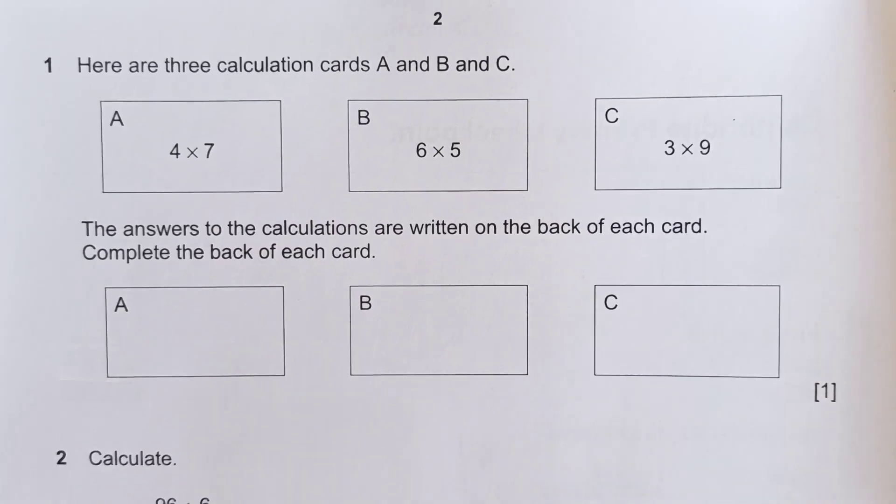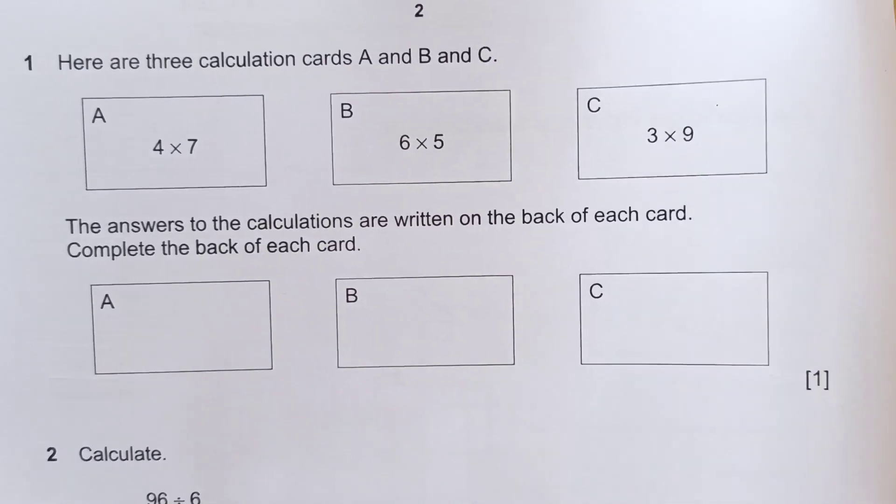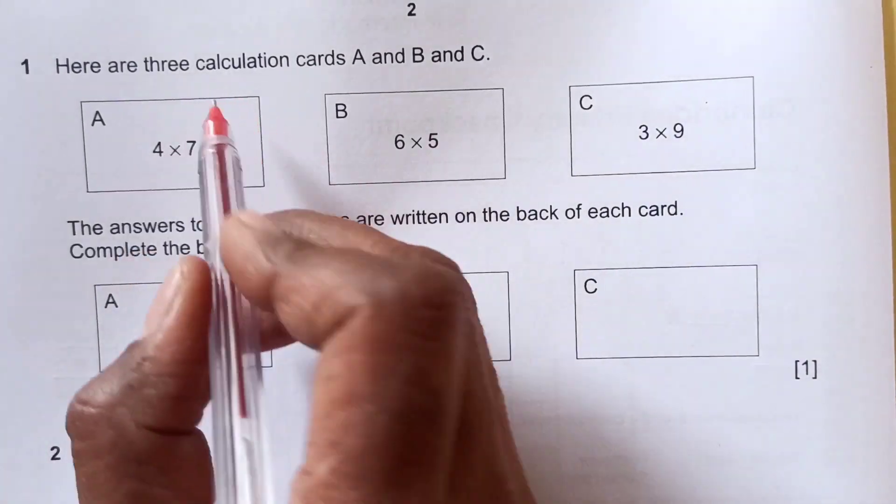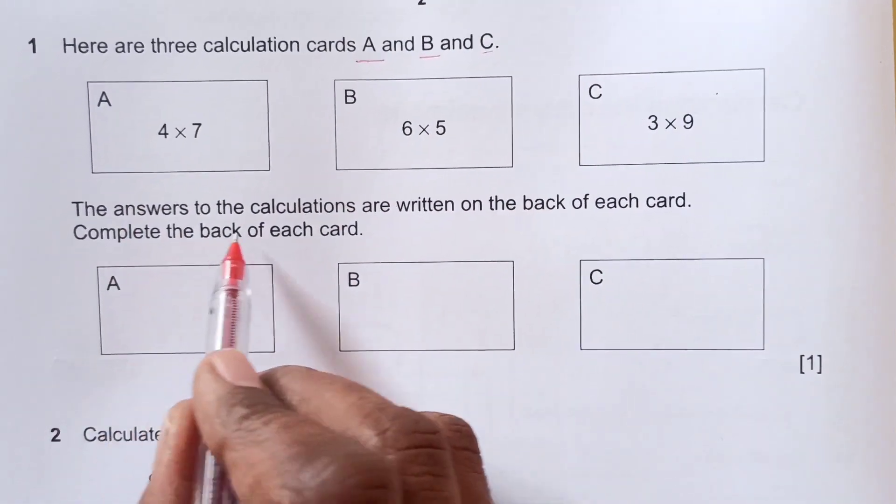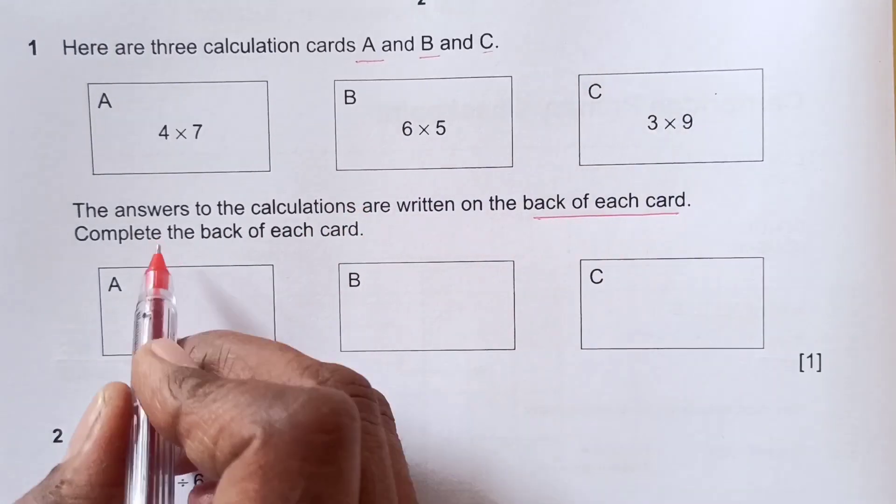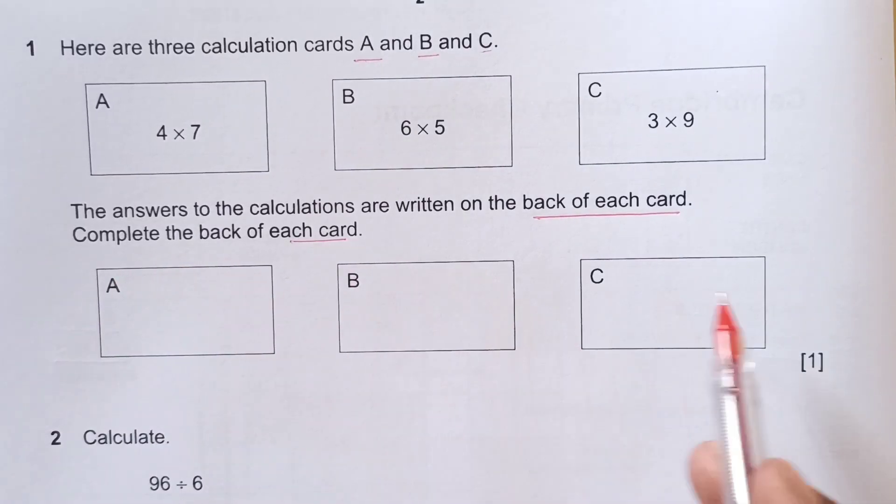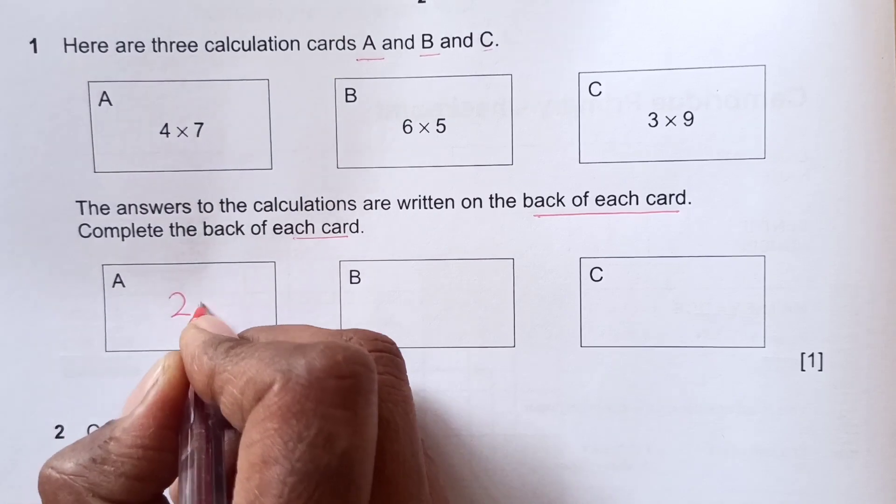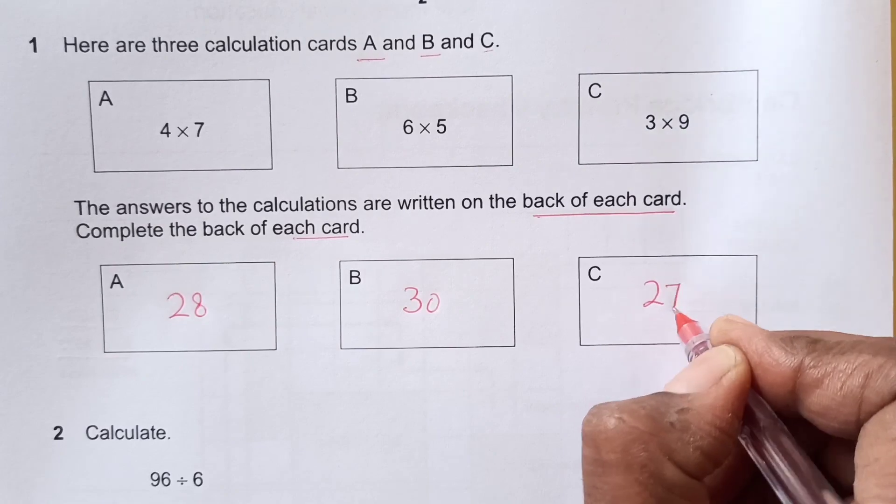As you know, this is paper 1 and we cannot use calculator, so we will do all the calculations on our own. Here are 3 calculation cards A, B and C. The answers to the calculations are written on the back of each card. Complete the back of each card. 4 times 7 is 28, 6 times 5 is 30, 3 times 9 is 27.